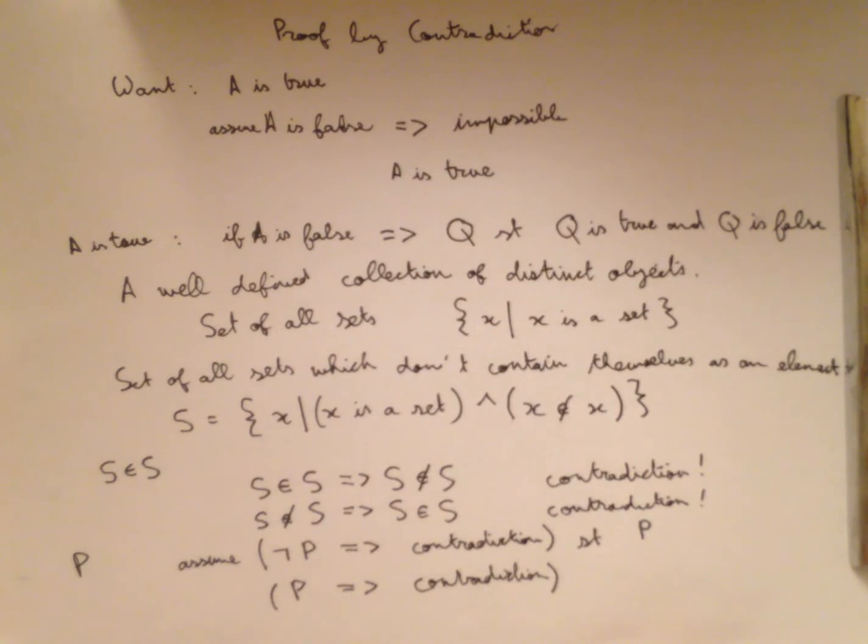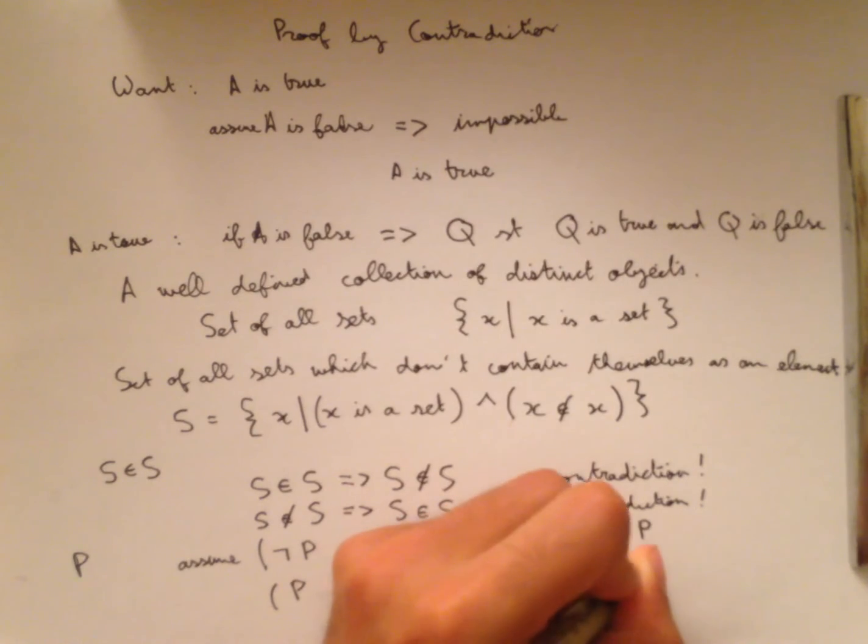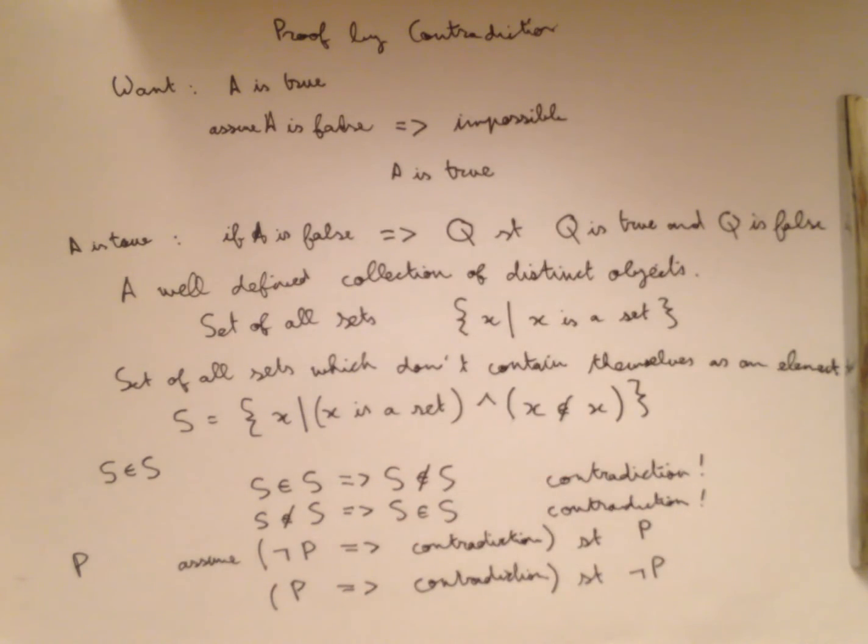So we can show that P implies a contradiction, we can show that not P implies a contradiction. And so we can conclude that both P and not P are true for any statement P.